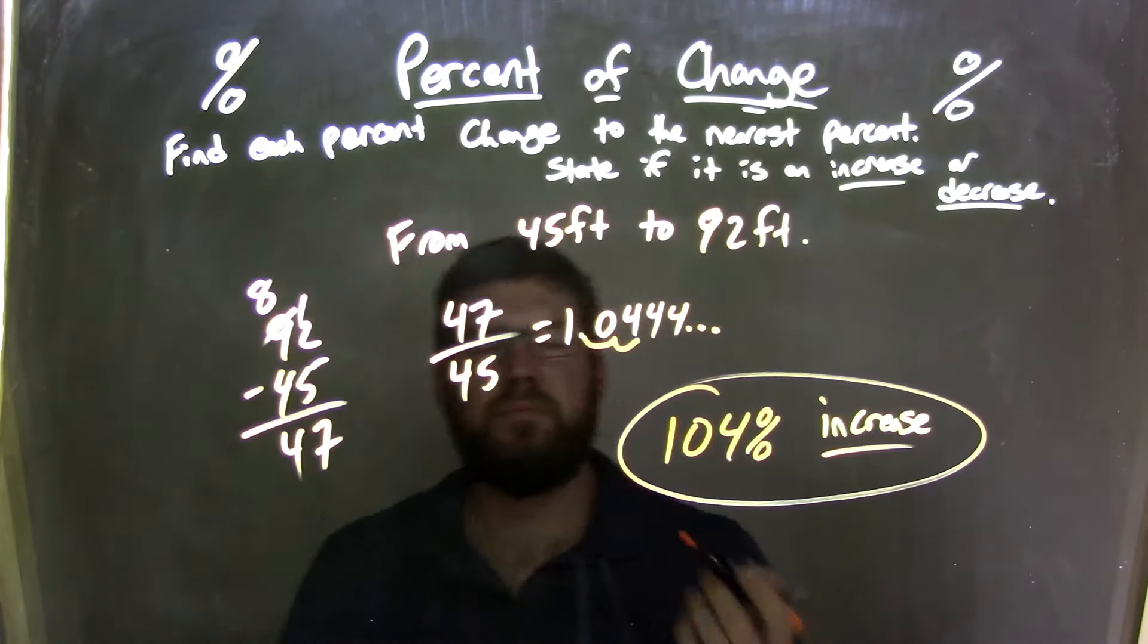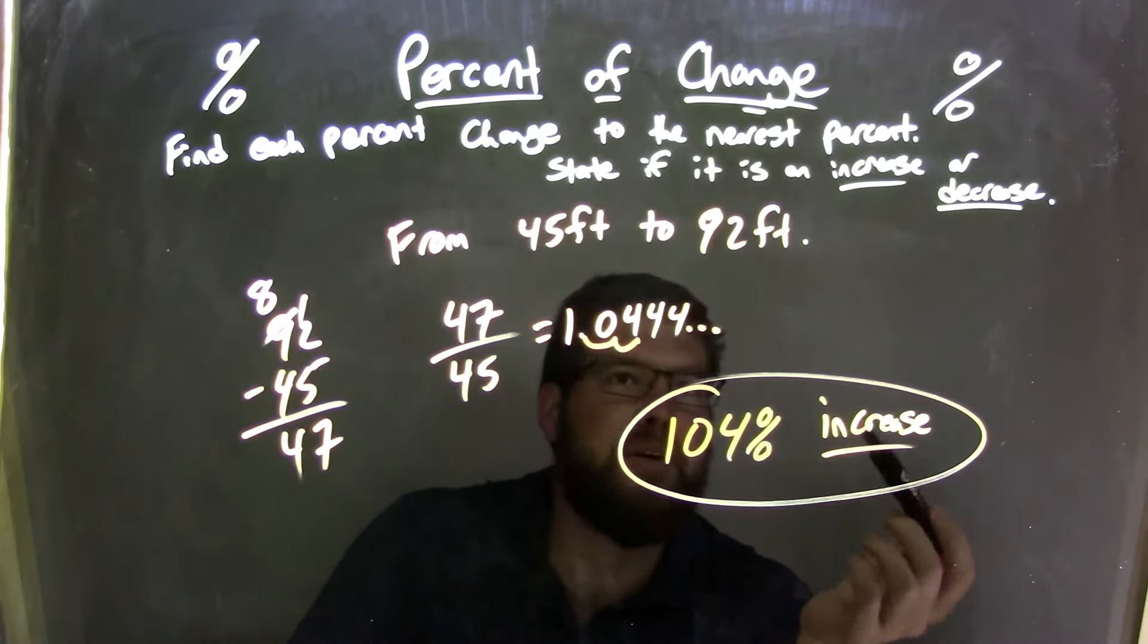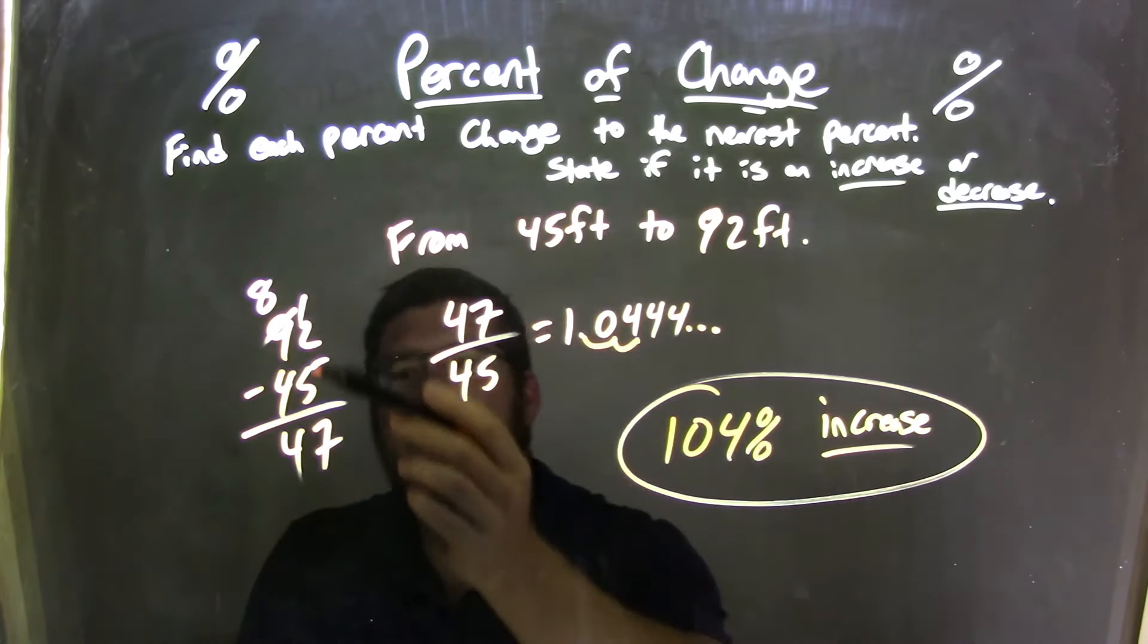So let's recap here. We started with our problem from 45 to 92 feet. We needed to know if that was an increase or decrease. It's an increase, we're going up. So we got that. We found the difference between the two, we got 47.